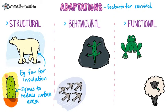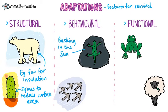Behavioural adaptations are how the organism behaves. For example, a lizard basking in the hot sun on a rock to raise its body temperature. Another example is that birds migrate to warmer countries in the winter.